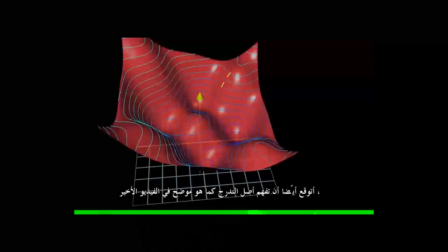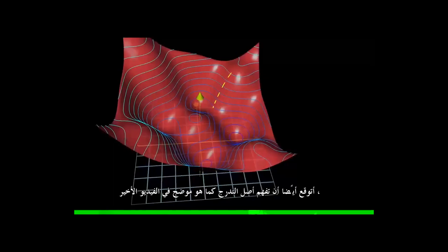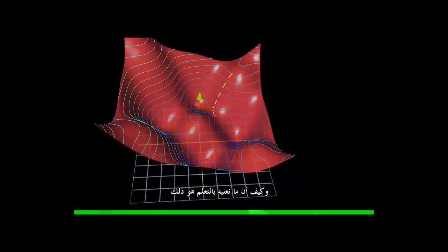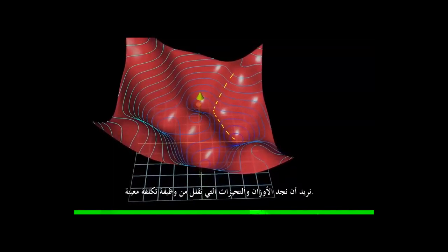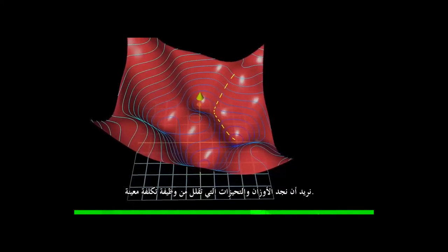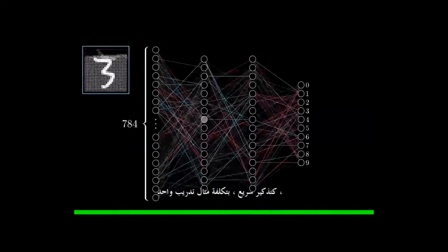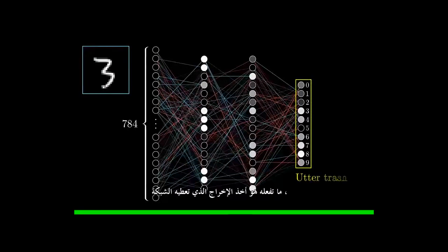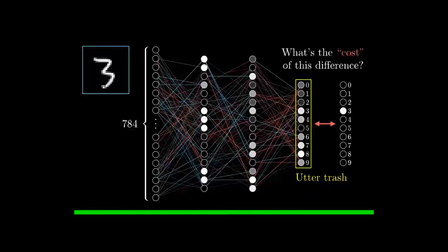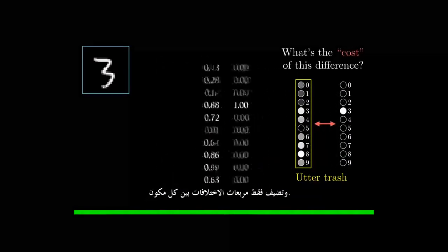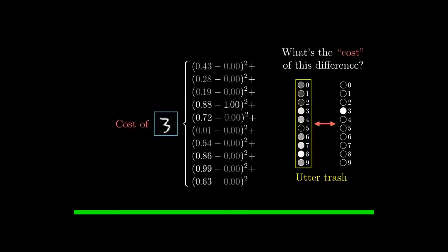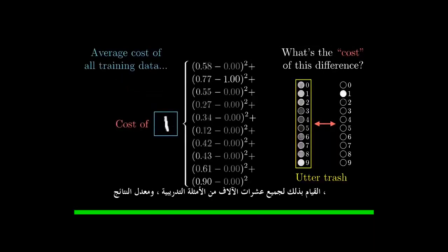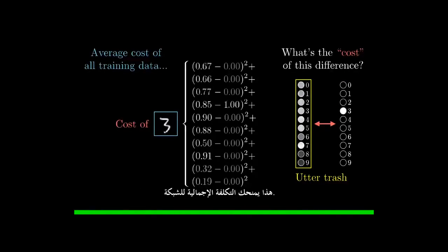I'm also expecting you to understand gradient descent, as described in the last video, and how what we mean by learning is that we want to find which weights and biases minimize a certain cost function. As a quick reminder, for the cost of a single training example, what you do is take the output that the network gives, along with the output that you wanted it to give, and you just add up the squares of the differences between each component. Doing this for all of your tens of thousands of training examples, and averaging the results, this gives you the total cost of the network.